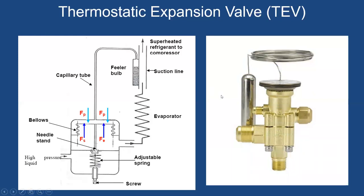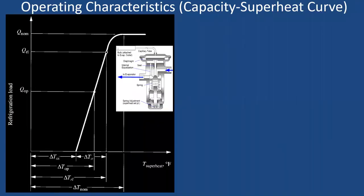A pictorial view of the thermostatic expansion valve shows the diaphragm, the sensing bulb mounted at the outlet of the evaporator, the capillary tube connecting the bulb to the valve body, and the adjustable screw mechanism at the inlet and outlet.